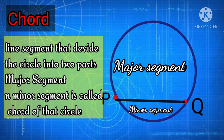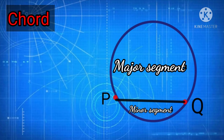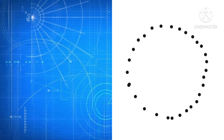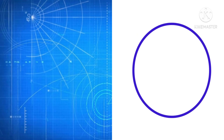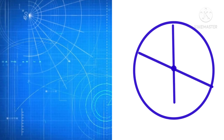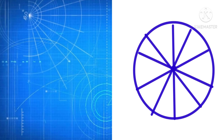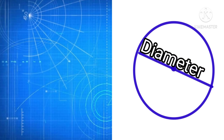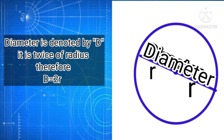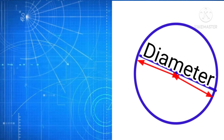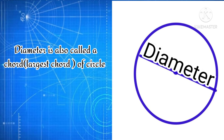A chord divides the circle into a major segment and a minor segment. Since a circle has infinite points, joining them gives us infinite chords, all different in length. When a chord passes through the center, it is called the diameter of the circle. The diameter is also called twice the radius, since it passes through the center. Diameter is also a chord, but not all chords are diameters.